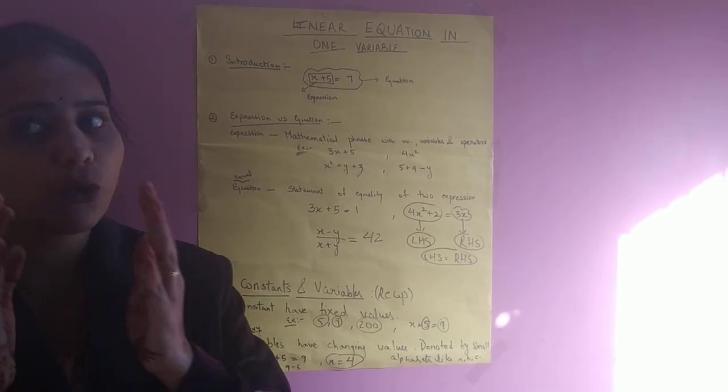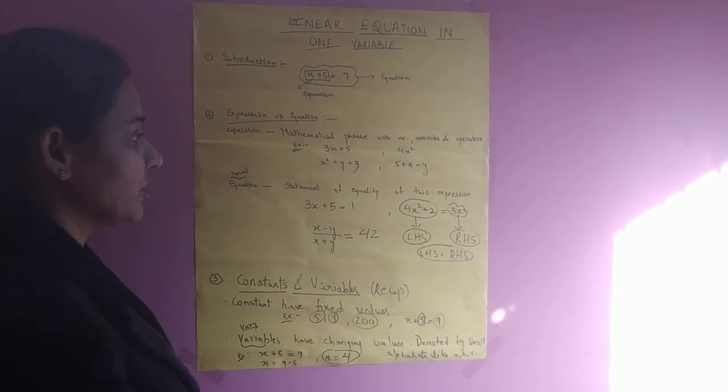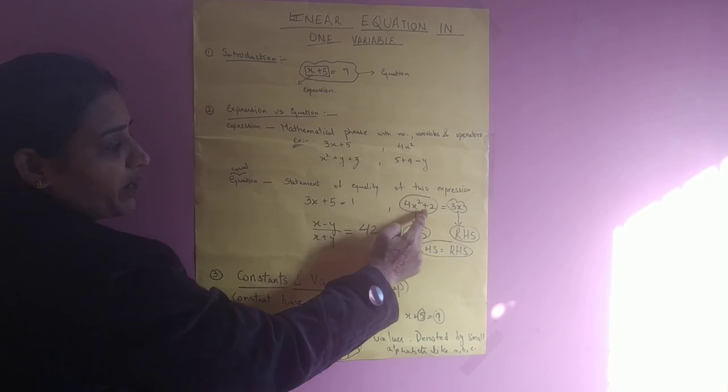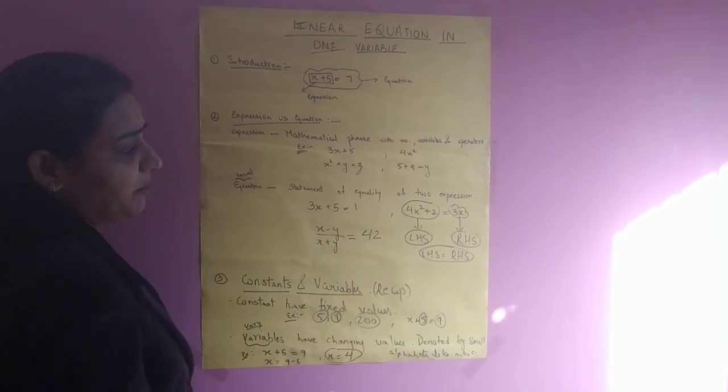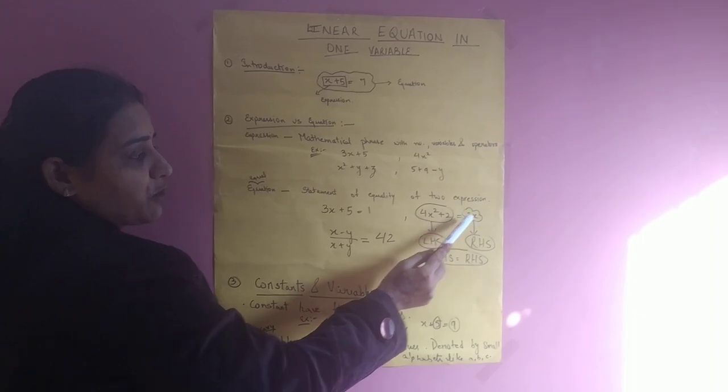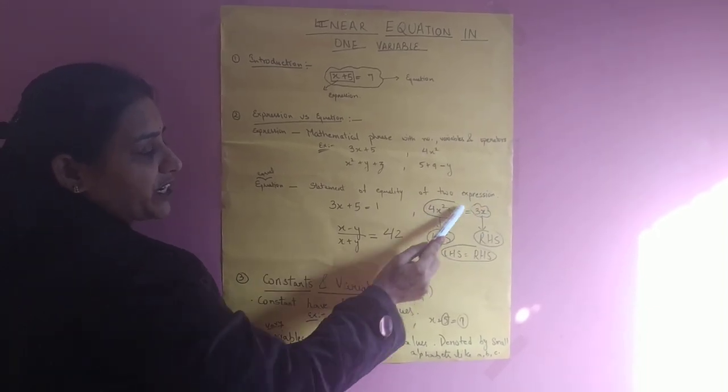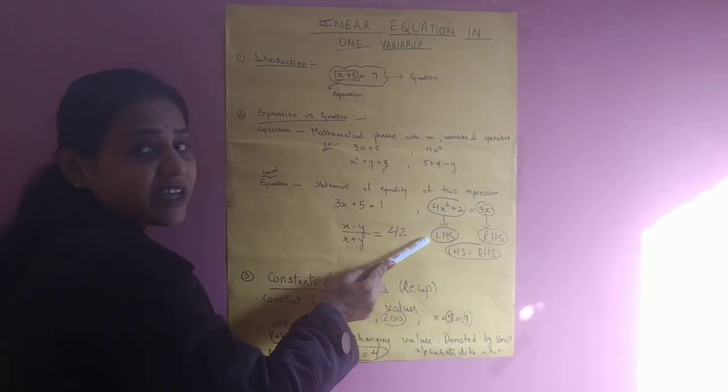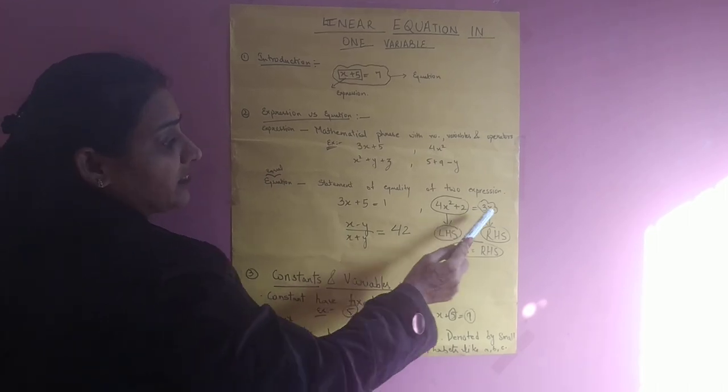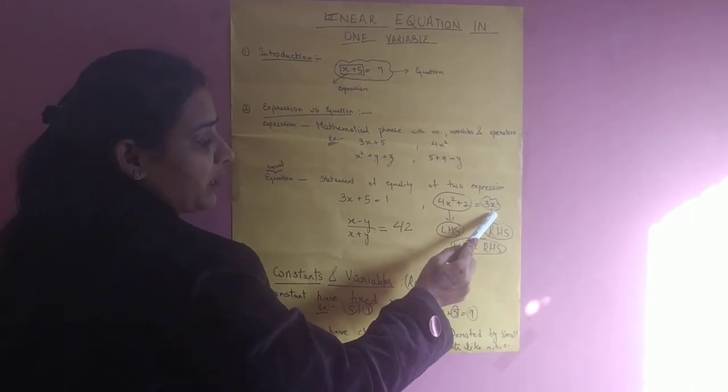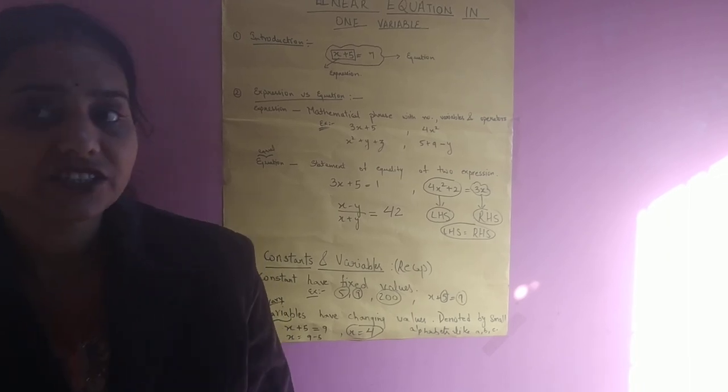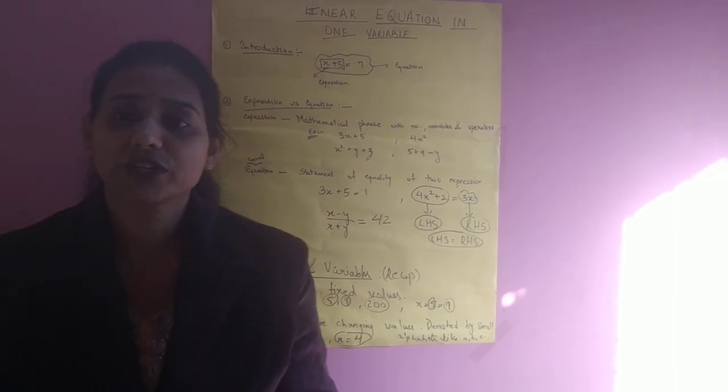With equality sign. So this part, in this example 4x square plus 2 equals 3x, this part 4x square plus 2 is known as the LHS part, while 3x is known as the RHS part. When LHS equals RHS, it is known as the equation.